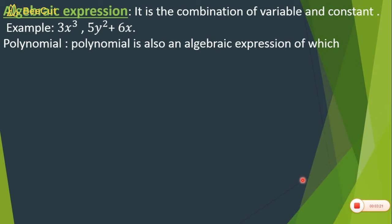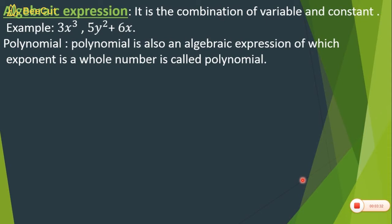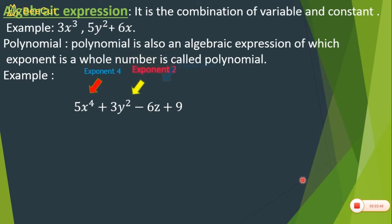Now come to our topic — polynomial. A polynomial is also an algebraic expression, but in a polynomial the exponent is a whole number. For example, in an expression like x to the power 4, y squared, z to the power 1: the exponents are 4, 2, and 1, which are all whole numbers. So all algebraic expressions whose exponents are whole numbers are called polynomials.